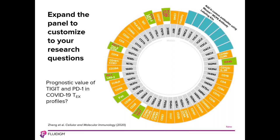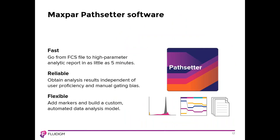Multiple immune checkpoint markers and markers of T-cell exhaustion are available as add-ons. Fluidigm has added these markers on additional metals to our catalog for greater panel design flexibility so that they are compatible with the Maxpar Direct Immune Profiling Assay. As an example, Zhang et al. recently hypothesized that TIGIT and PD-1 may have prognostic values in COVID-19 T-cell exhaustion profiles. Now, the automated software solution designed specifically to analyze FCS files collected using the Maxpar Direct Immune Profiling Assay is Maxpar Pathsetter. This software enables fast, reliable identification and enumeration of the 37 cell populations defined by the 30 markers in the assay kit — going from an FCS file to a high-parameter analytic report in as little as 5 minutes.